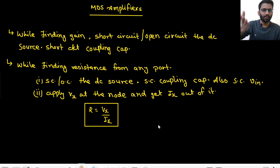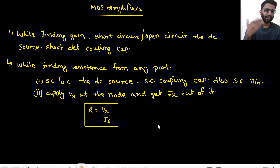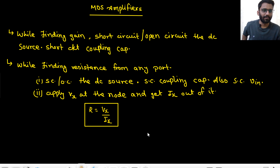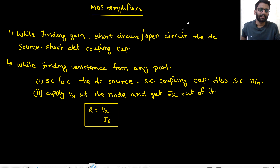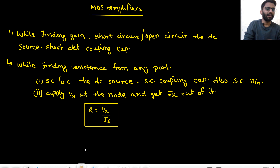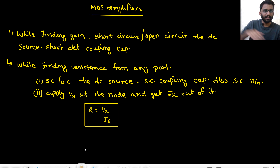Let's see the basics first. To find the small signal voltage gain: short circuit or open circuit the DC sources — if it's a voltage source, short circuit it; if it's a current source, open circuit it. Also short circuit the coupling capacitor if present. Coupling capacitors appear between gate and supply in some MOSFET circuits. For impedance, short circuit the DC sources, coupling capacitors, and the small signal input voltage, then apply Vx and get Ix.